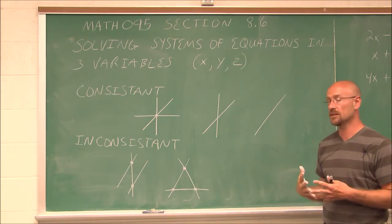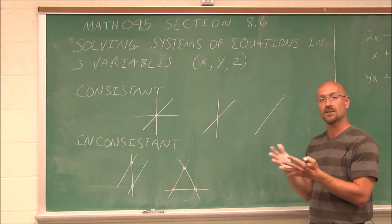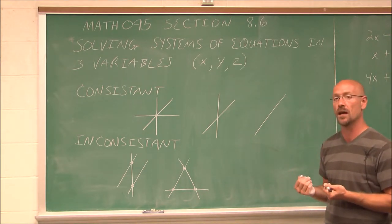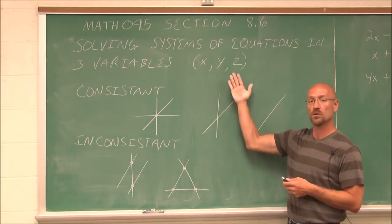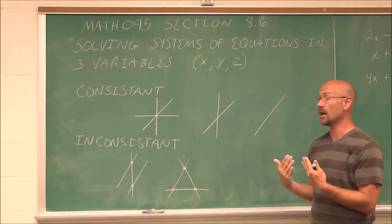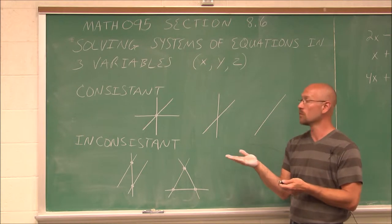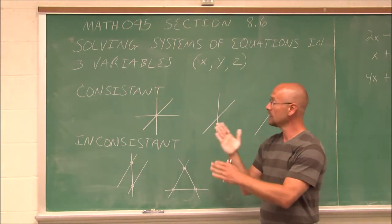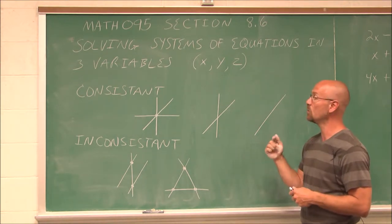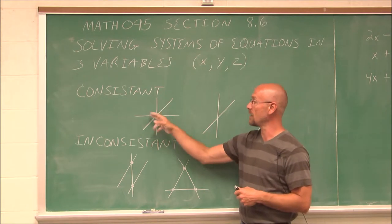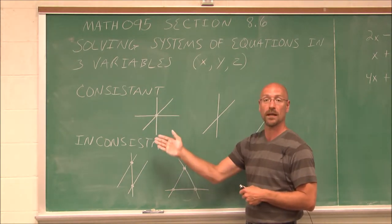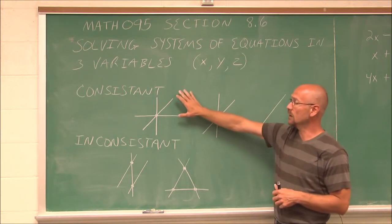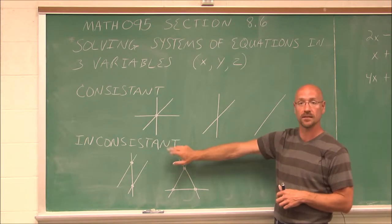Now, two variables represents lines — x and y — and we know that represents lines. But when we deal with three variables, we're actually dealing with planes instead of lines. If we think of a plane as like a sheet of paper, we can imagine these planes coming in or out of the board. We have three dimensions: x, y, and a z plane — that z plane would be the one that comes in or out of the board.